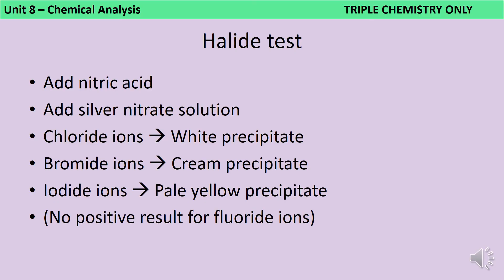The test is: firstly add nitric acid. We can't use hydrochloric acid because that would add chloride ions, and we can't use sulfuric acid because that would add sulfate ions — both would give a false positive. Then add silver nitrate solution. If chloride ions are present you get a white silver chloride precipitate; if bromide ions are present you get a cream silver bromide precipitate; if iodide ions are present you get a pale yellow silver iodide precipitate. There is no positive test for fluoride ions because silver fluoride is soluble.